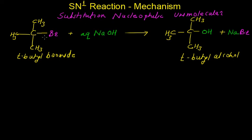Now in SN1 reaction, you can see tertiary butyl bromide reacts with alkali such as sodium hydroxide or potassium hydroxide and gets converted into tertiary butyl alcohol.